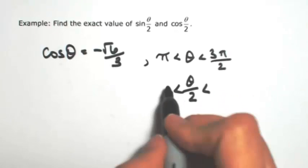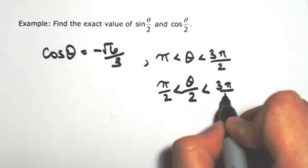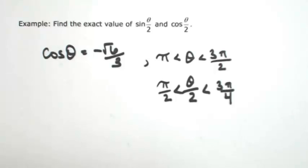So dividing everything by 2, theta over 2 is between pi over 2 and 3 pi over 4. In other words, that's going to be in the second quadrant.